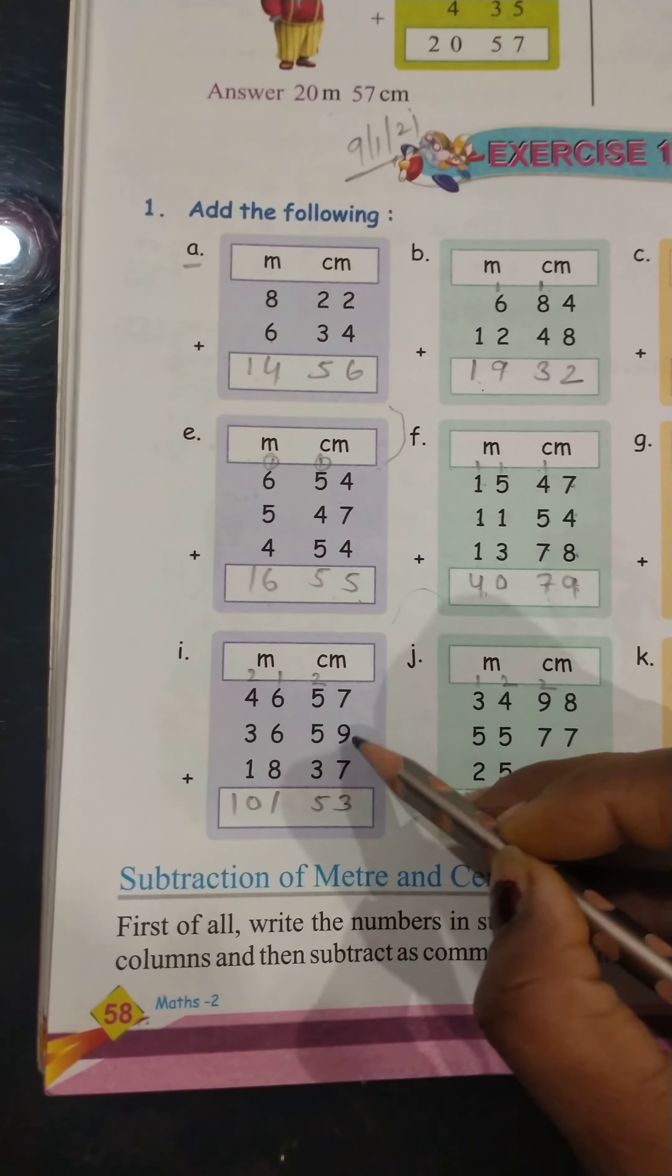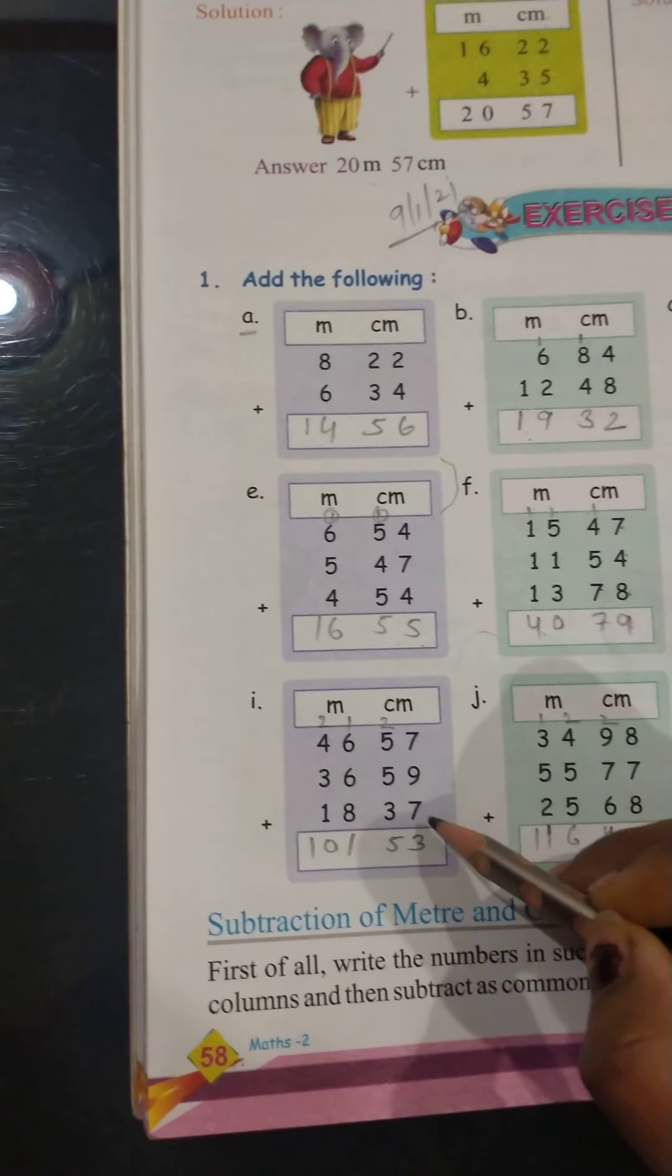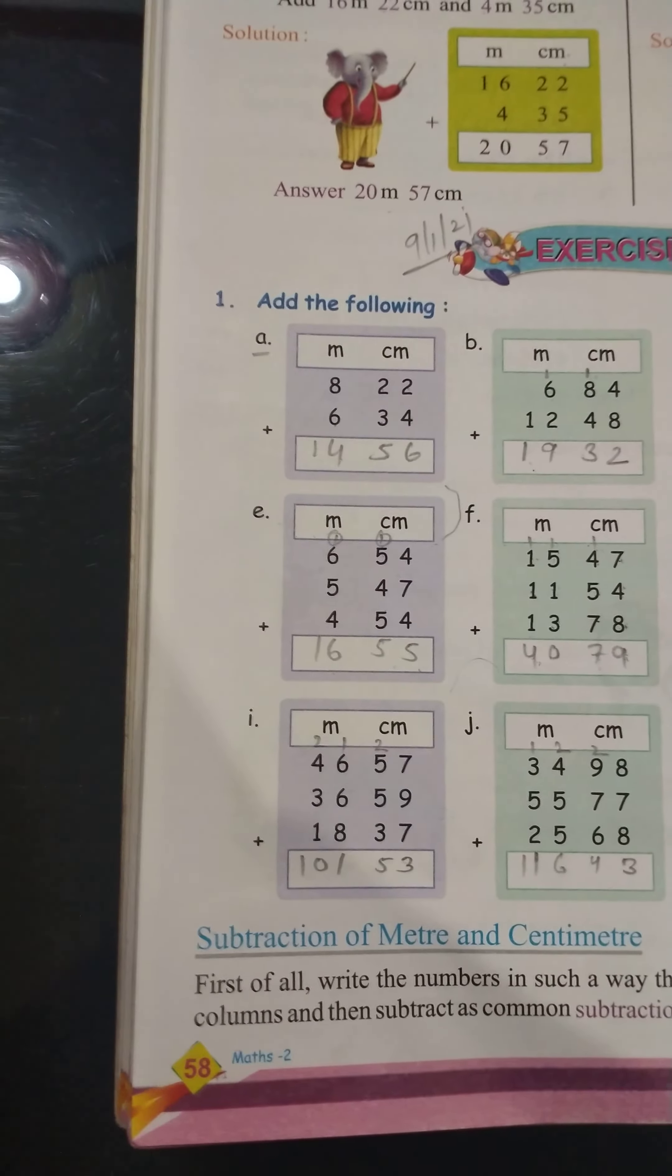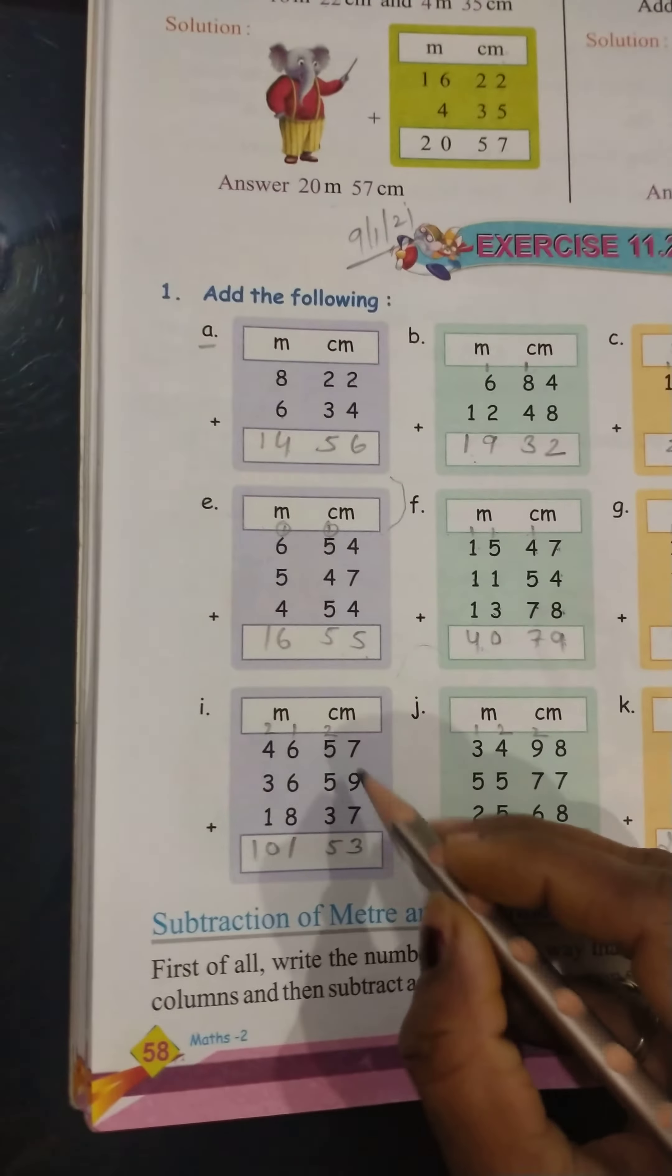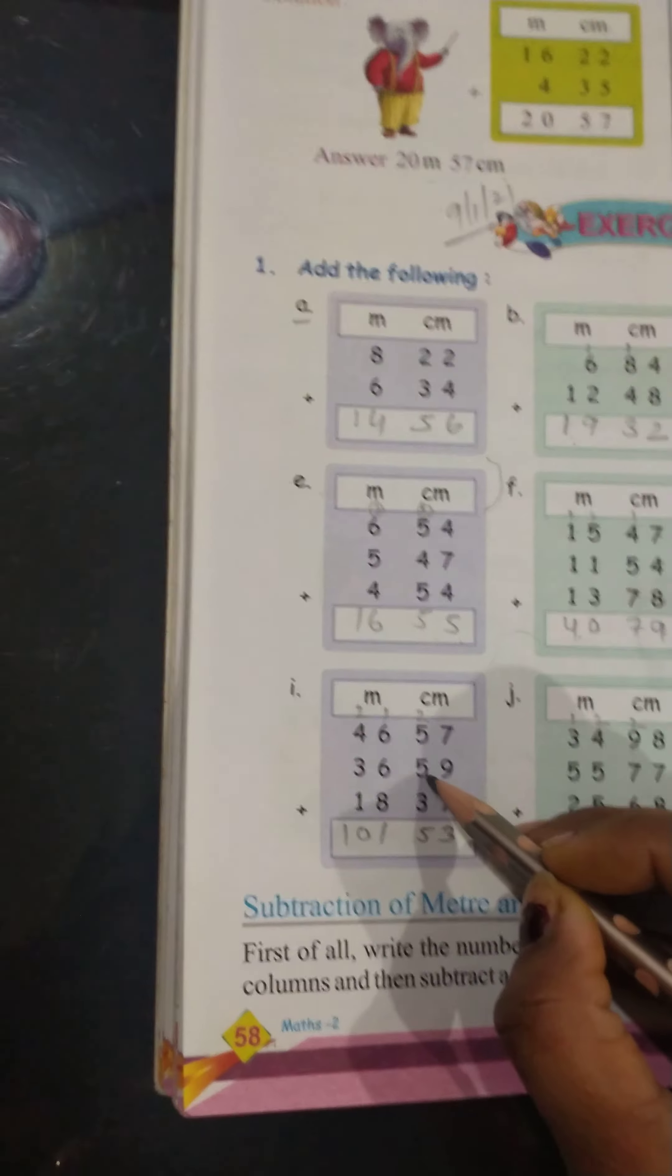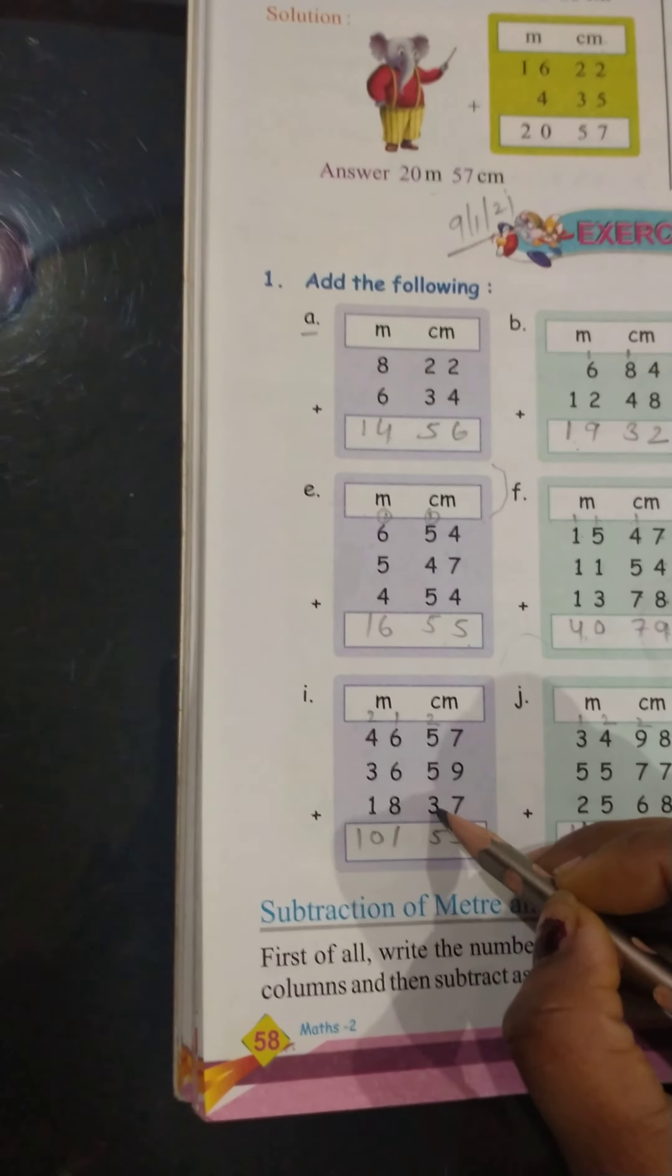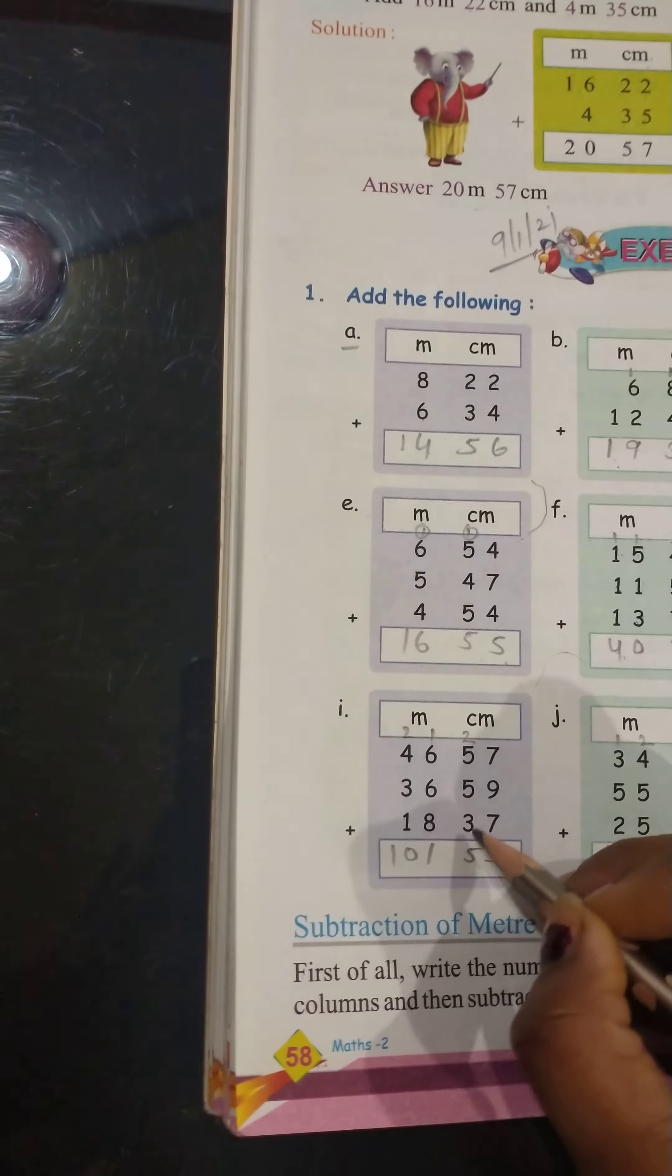7 plus 9, 16. 16 plus 7, 23. 23 come 2 carry. 5 plus 5, 10. 10 plus 3, 13. 13 plus 2, 15.